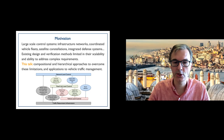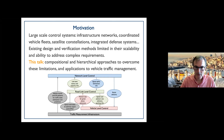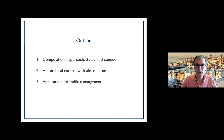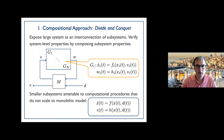As a motivating application I'll be talking about vehicle traffic management, which involves many layers: vehicle-level control, road link-level control where you deal with signal timing, and network level where you deal with routing. In the first part I'll talk about compositionality — how we can divide and conquer a large problem. The second part covers hierarchical control and abstractions to deal with multiple layers. The third part covers applications to traffic management.